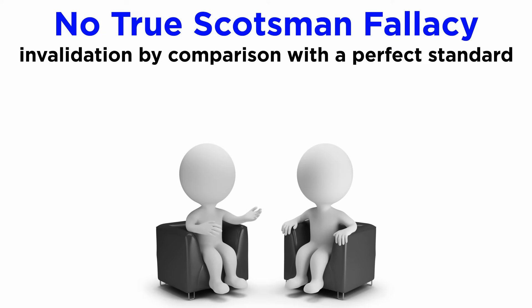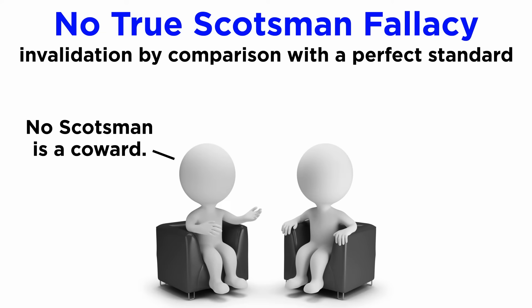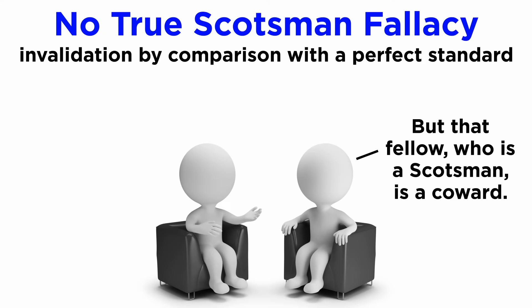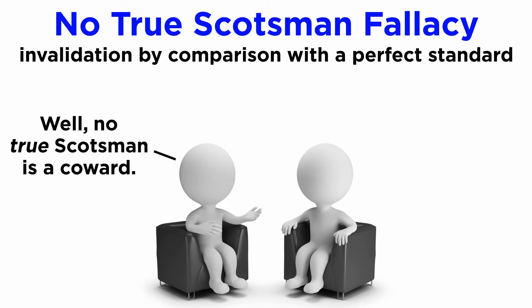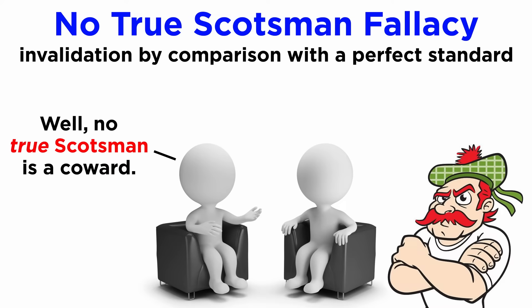This is derived from the following: no Scotsman is a coward — but that fellow, who is a Scotsman, is a coward — well, no true Scotsman is a coward. This attempts to establish an unquestionable standard which can only be exemplified by instances where they would fit all of the necessary criteria, excluding any other possible variations, and shifting its definition always to a purer version — an unscientific rhetorical device that tries hard not to dialogue with any counterexamples.